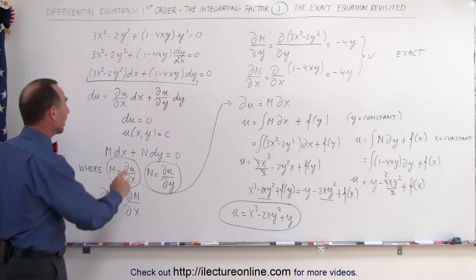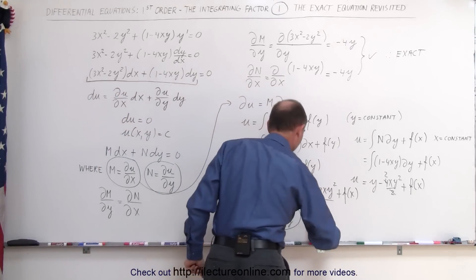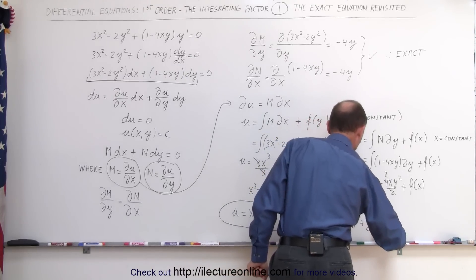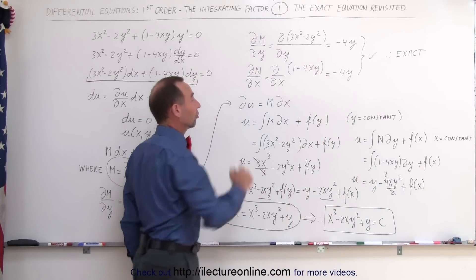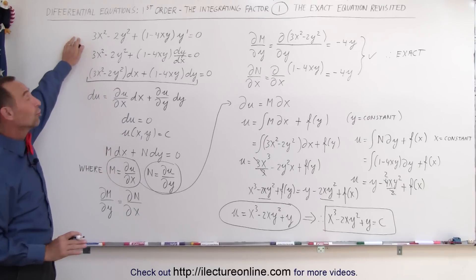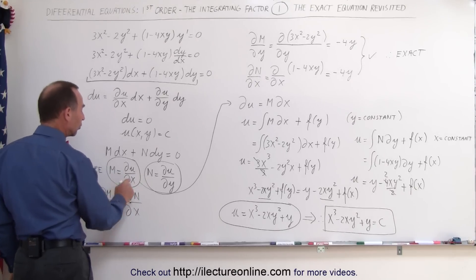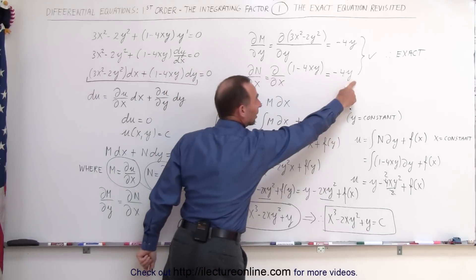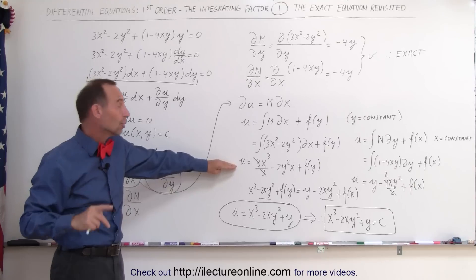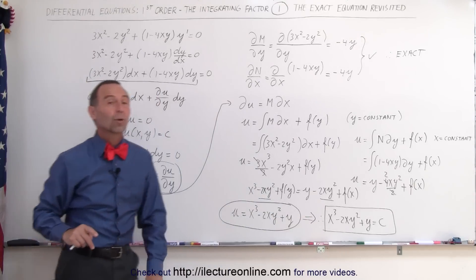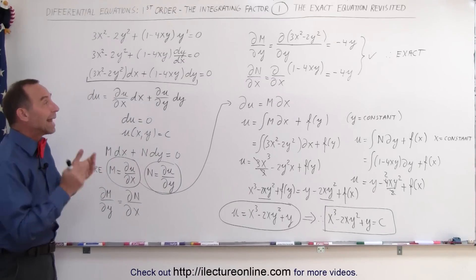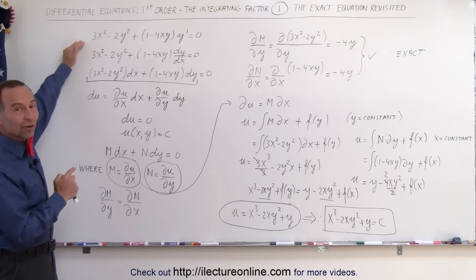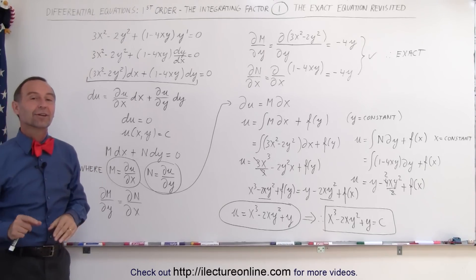Therefore, u = x³ − 2xy² + y, and since u equals a constant, the solution to the original differential equation is: x³ − 2xy² + y = C. In the rest of this series, we'll look at equations that are not exact. When they're not exact, we use an integrating factor to make them exact so we can still find the solution — and that is what this series is all about.